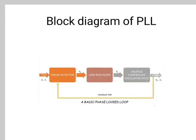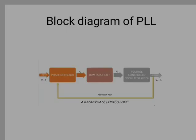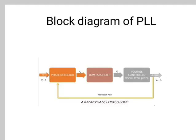The phase lock loop takes in a signal to which it locks, and it can then output this signal from its own internal VCO. With a little ingenuity, it is possible to develop a large number of phase lock loop applications. This diagram shows the block diagram of PLL, which consists of a phase detector, low-pass filter, and VCO (voltage controlled oscillator).